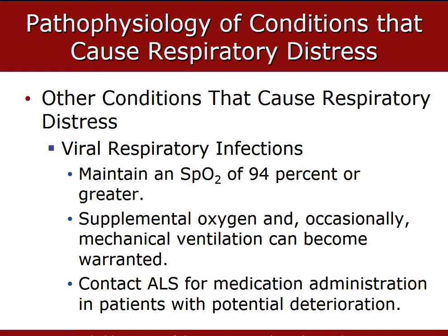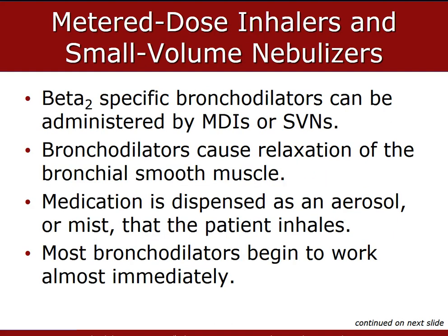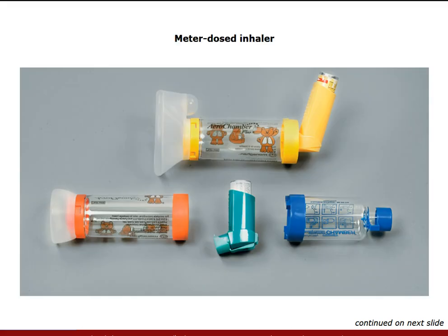Supplemental oxygen is given, and occasional mechanical ventilation may be needed depending on severity. Make sure ALS is en route to intercept. Beta-2 agonists via metered dose inhaler or small volume nebulizer relax the smooth muscle in the bronchioles. They begin to work almost immediately and their effects can last up to 8 hours or more. Because of the swift relief they can provide, they are appropriate for pre-hospital administration by EMTs with approval of medical direction.